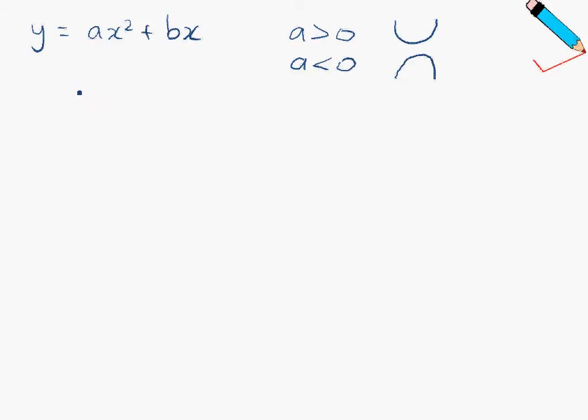So if that's the case, if I were to plot the graph of y against x, I will either get a smiley or a frowny curve, depending on the value of a.